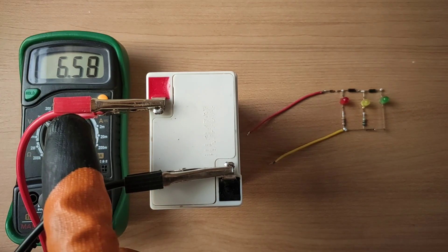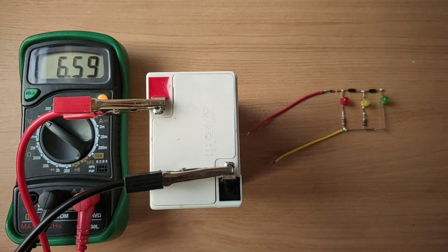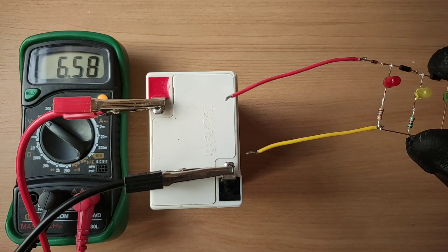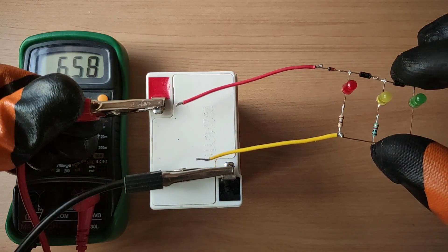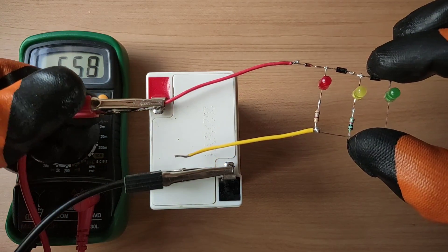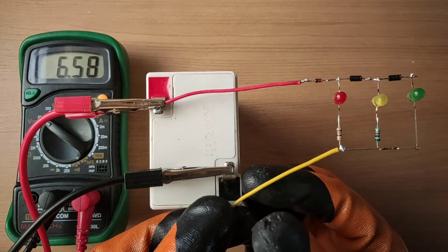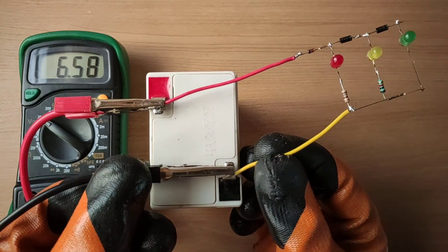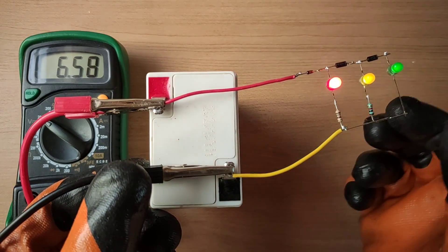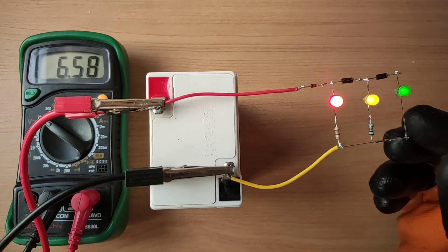This battery is fully charged as you can see output is 6.6 volts. Now I will connect this circuit with battery. You can see all LEDs are glowing.